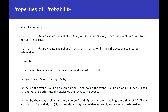Now let A1 be 'rolling a prime number' — that's {2, 3, 5} — and A2 be 'rolling a multiple of three' — that's {3, 6}. These two events have 3 in common, so their intersection is not empty, meaning they are not mutually exclusive. Also, 1 and 4 are in neither event, so their union doesn't cover the entire sample space — they are not exhaustive either. So this pair is neither mutually exclusive nor exhaustive.